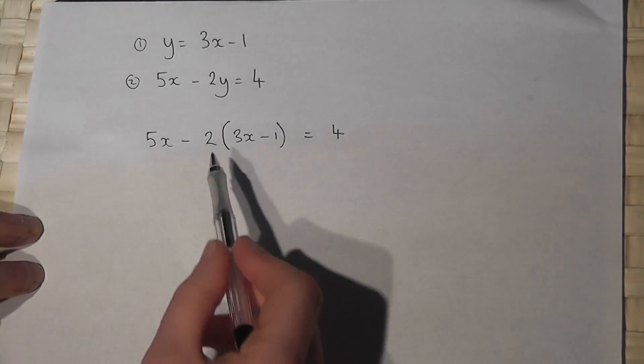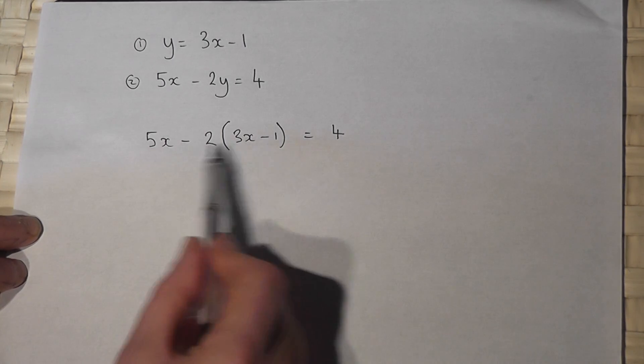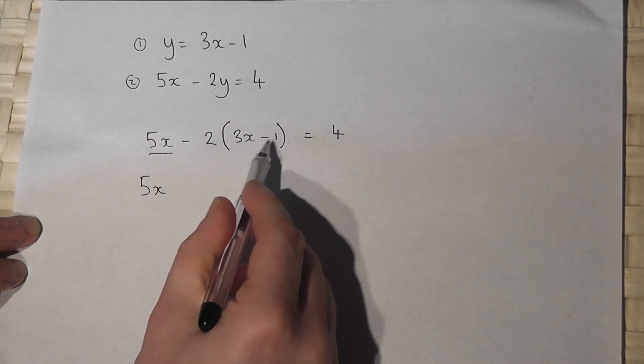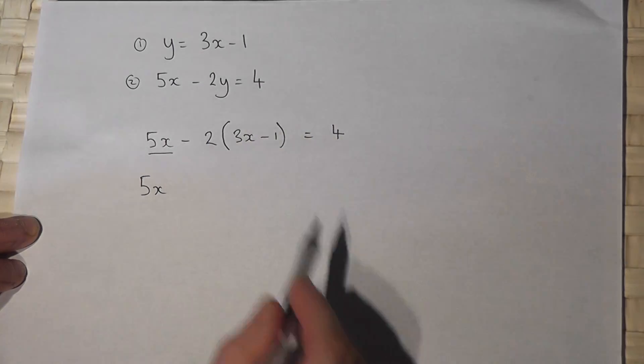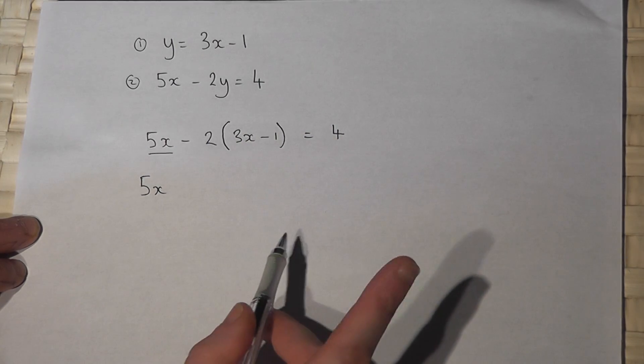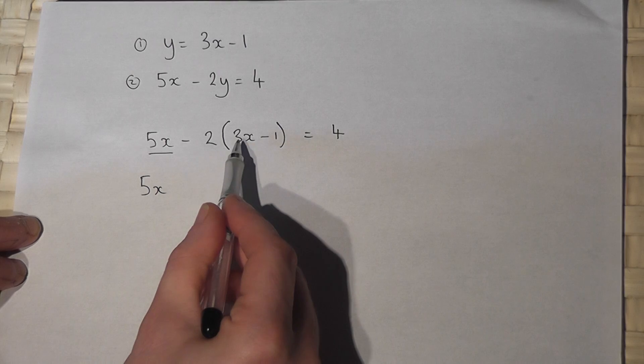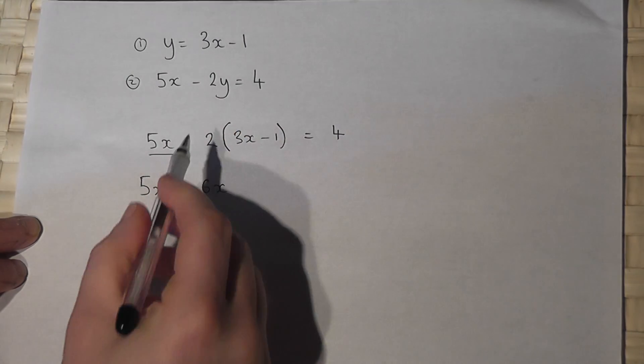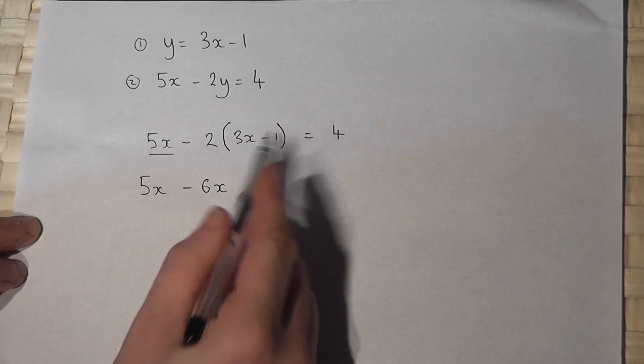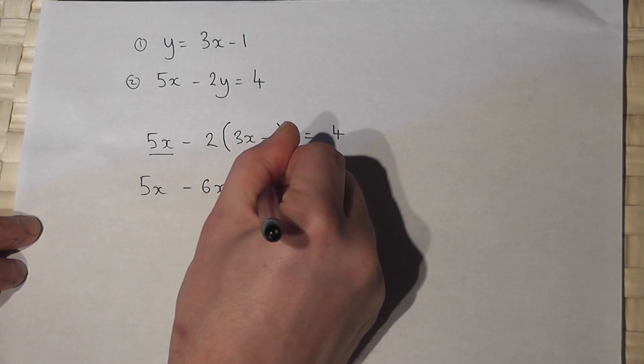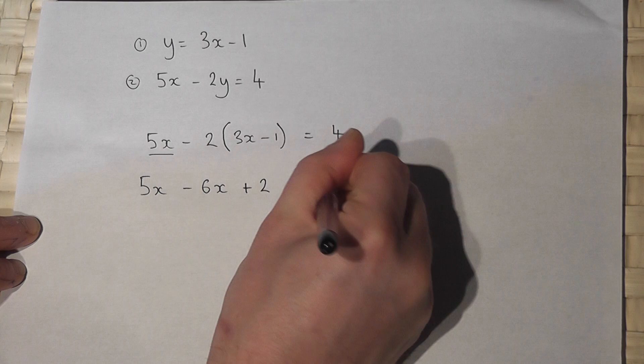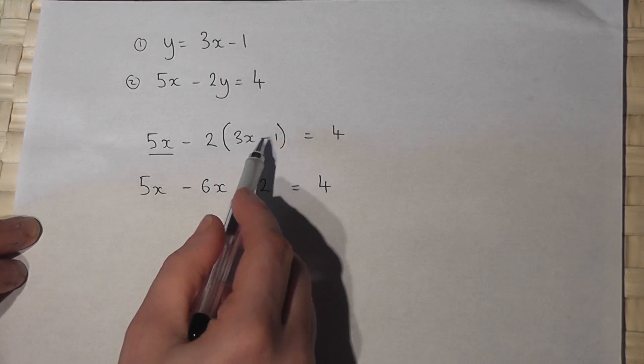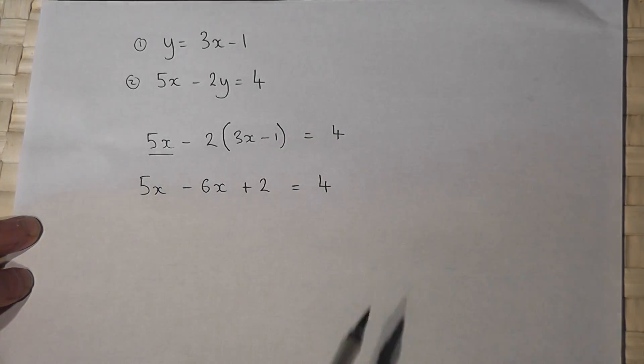Now with brackets, I know I must expand first of all. So I've got a 5x, but this bracket is times by a minus 2. So I must be really careful here. Minus 2 times 3x is minus 6x, but minus 2 times minus 1 is plus 2. And that's a really important thing not to forget. When we've got two negatives, it becomes positive.